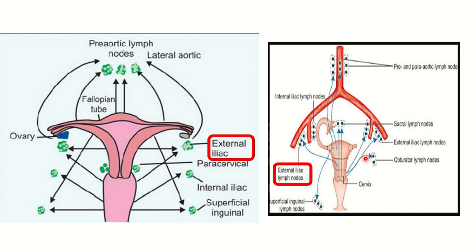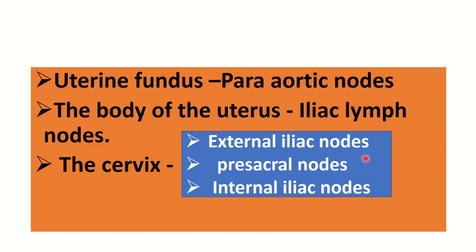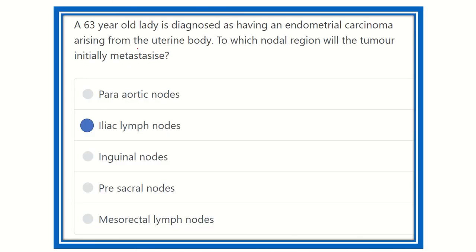The cervix drains to the para-sacral, obturator, external iliac, and internal iliac lymph nodes. In summary: the uterine fundus drains to para-aortic lymph nodes, the body of the uterus drains to the iliac lymph nodes, and the cervix drains to external iliac, internal iliac, and pre-sacral lymph nodes. Since the tumor arises from the body of the uterus, the final answer is that it will initially metastasize to the iliac group — specifically the external iliac lymph nodes. Thank you.